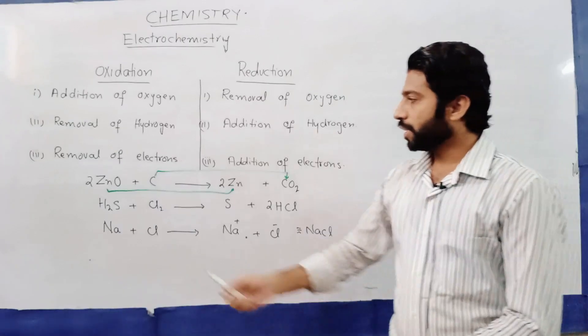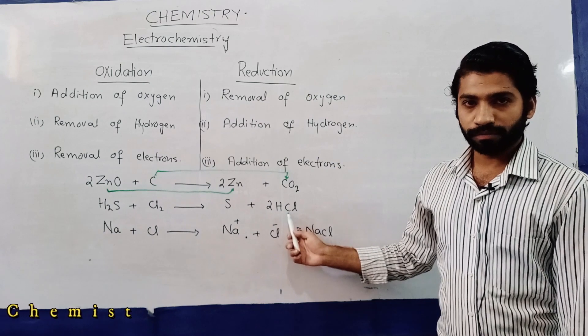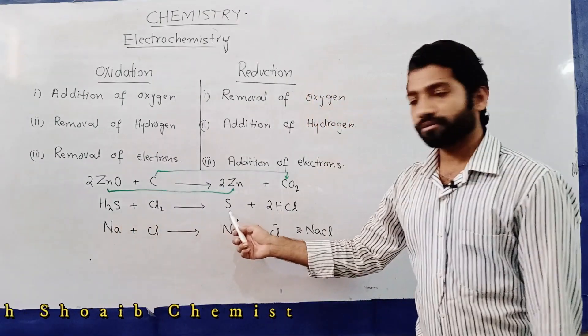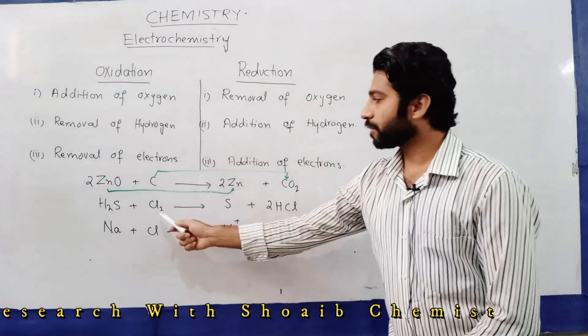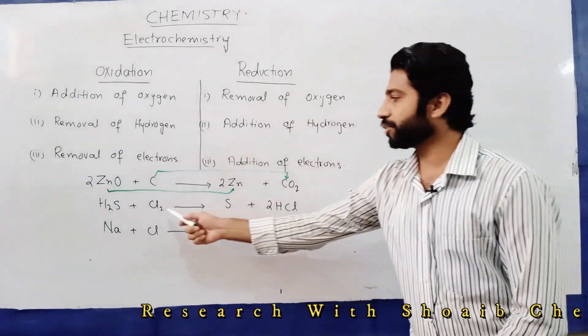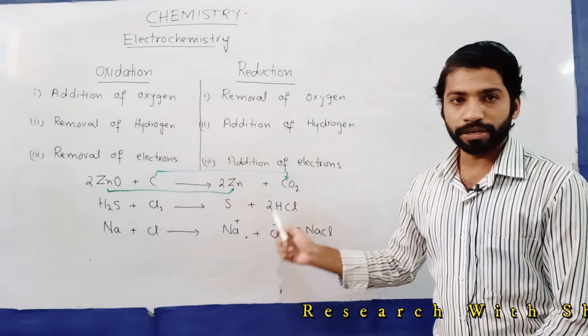The next example: hydrogen sulfide H2S can react with chlorine Cl2 to form sulfur S and hydrochloric acid HCl. Here, removal of hydrogen takes place from hydrogen sulfide, so this step is known as oxidation. And chlorine forms hydrogen chloride, so there is an addition of hydrogen to chlorine, and that step is known as reduction.